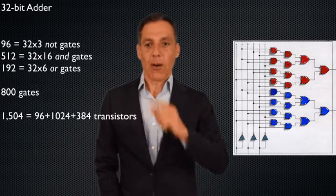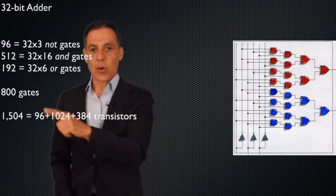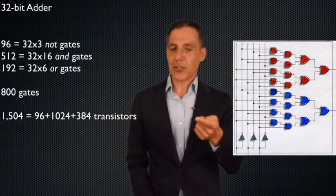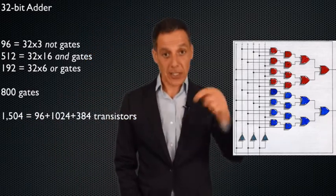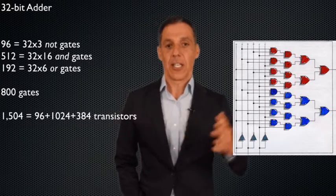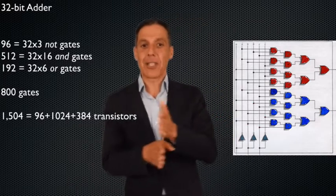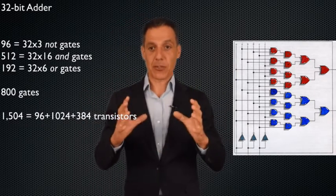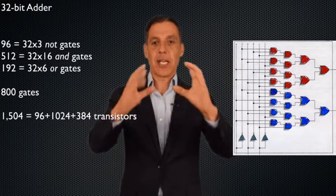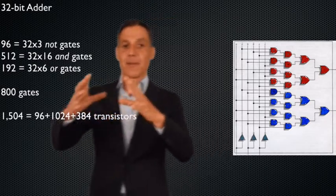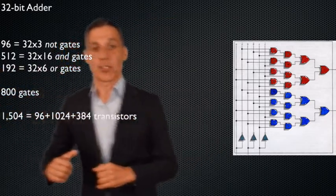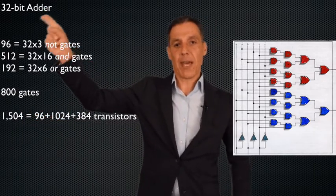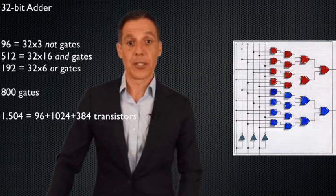Is 800 gates a lot? Those 800 gates correspond to about 1,500 transistors, because underneath the gates it's transistors. Now look at the levels of abstraction: the 32-bit adder is made of 1-bit adders, made of gates, made of transistors. I need 1,500 transistors to perform one single mathematical operation — 32-bit addition.